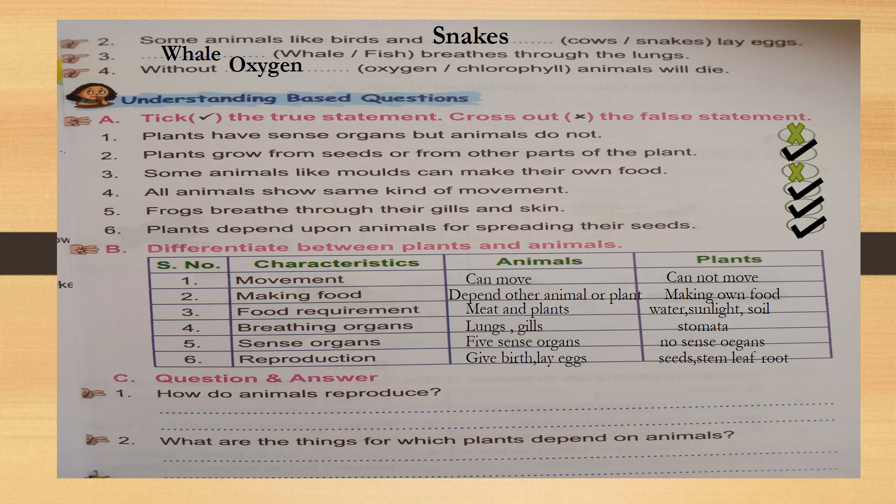Third one: some animals like moles can make their own food. Is it true or false? False — give cross. Fourth one: all animals show some kind of movement. Yes — give tick. Those who are correct — very good children.